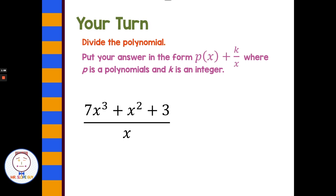All right, you guys try this one on your own. Pause the video here. All right, welcome back. If we are dividing this one, the first two terms divide evenly and the last term is where we had this k over x form. So we get 7x squared plus x plus 3 over x.